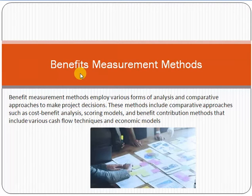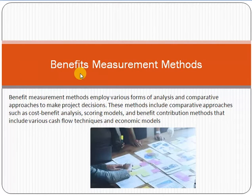For example, making a mobile application through which customers can buy food online. By using methods like cost-benefit analysis and scoring models, you can evaluate how much cost is involved, how much benefit you'll receive, and whether it is feasible to invest in such a project. If cost is very high and benefits are low, we should drop such projects.